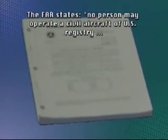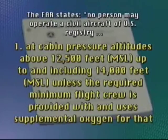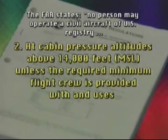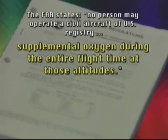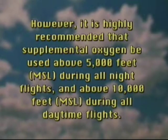The FAR states: No person may operate a civil aircraft of U.S. registry: (1) At cabin pressure altitudes above 12,500 feet MSL up to and including 14,000 feet MSL, unless the required minimum flight crew is provided with and uses supplemental oxygen for that part of the flight at those altitudes that is more than 30 minutes duration; (2) At cabin pressure altitudes above 14,000 feet MSL, unless the required minimum flight crew is provided with and uses supplemental oxygen during the entire flight time at those altitudes. However, it is highly recommended that supplemental oxygen be used above 5,000 feet MSL during all night flights and above 10,000 feet MSL during all daytime flights.